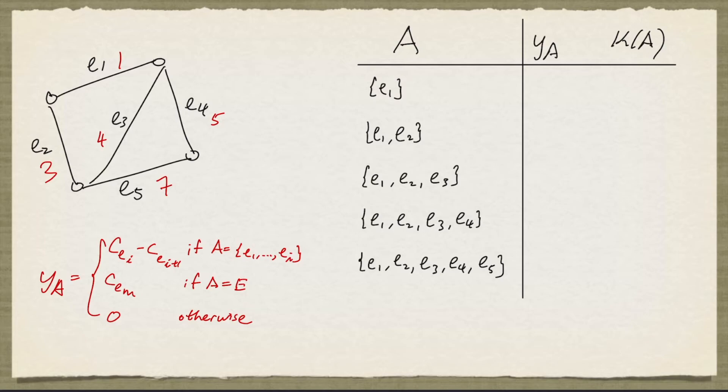And we have to assign non-zero values to y_a, where a is the set containing just e1, the set e1, e2, the set e1, e2, e3, and so on up to the set e1, e2, e3, e4, e5, which is the entire edge set for the graph. y of e is easy. For e, it simply takes the edge cost of e5, and that's 7.